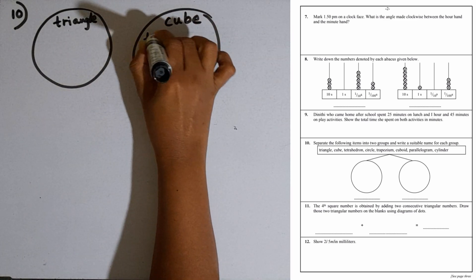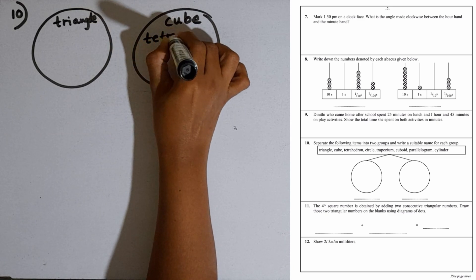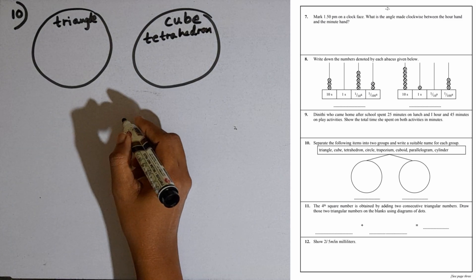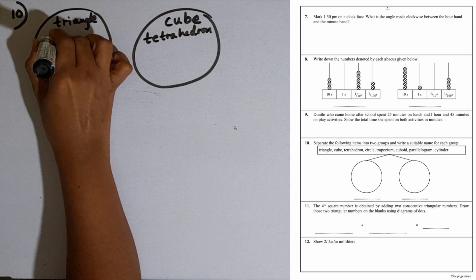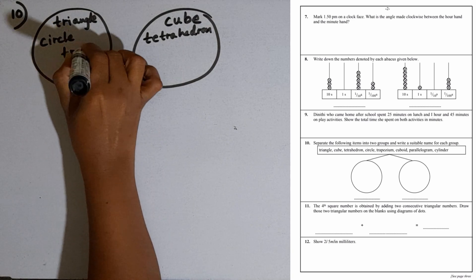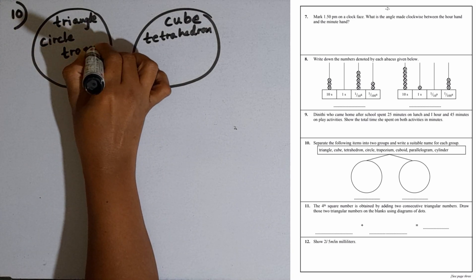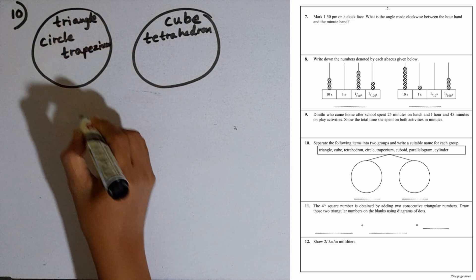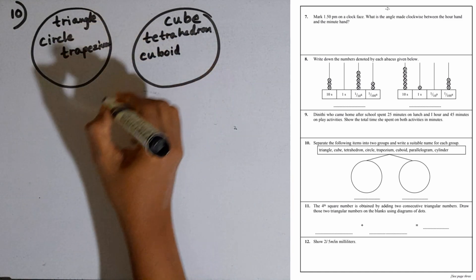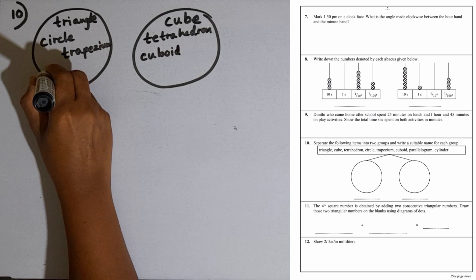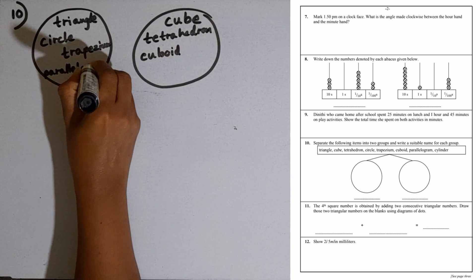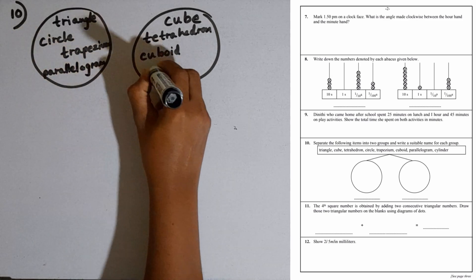Tetrahedron is also a solid. Next one circle. Then trapezium, it is a shape. Cuboid is a solid. Parallelogram is a shape. Last one cylinder.